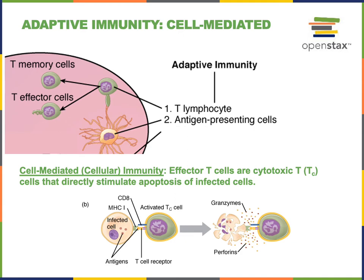T lymphocytes can also be activated by an individual cell of our body that becomes infected with an intracellular pathogen, like a virus or a bacteria that grows inside of the cells of our body. When an infected cell has an intracellular pathogen inside, that infected cell can display antigen from the pathogen on its surface as a way of signaling to T lymphocytes that the cell is infected.